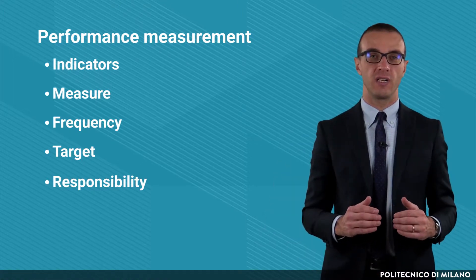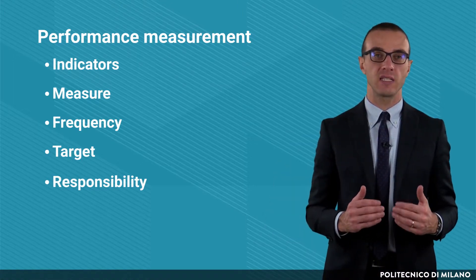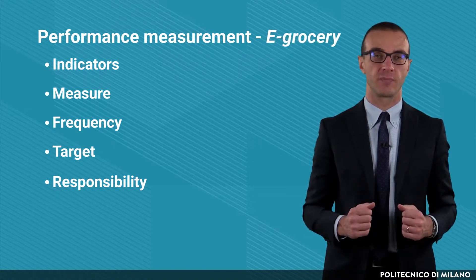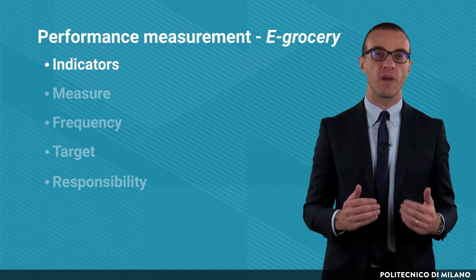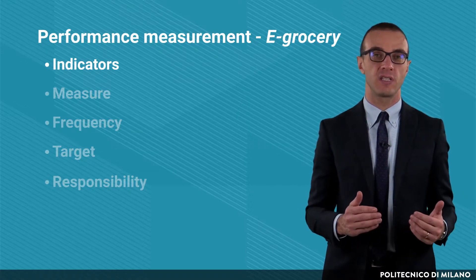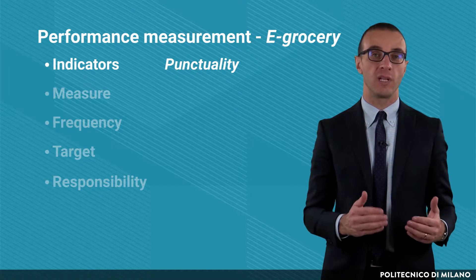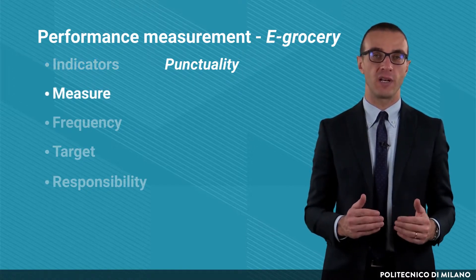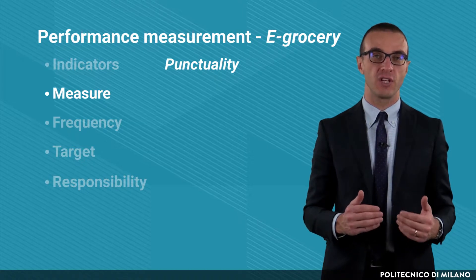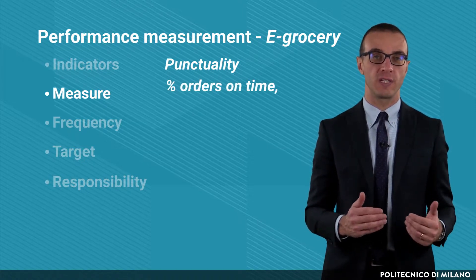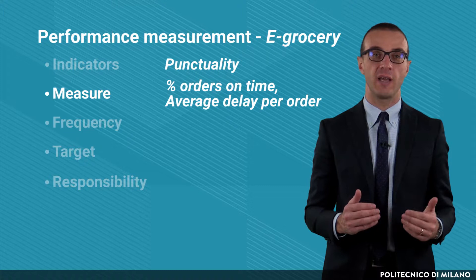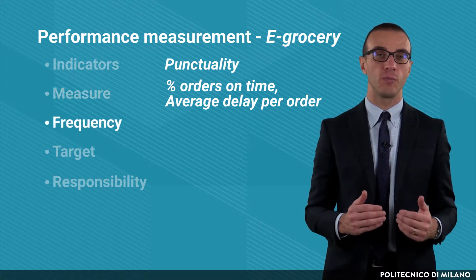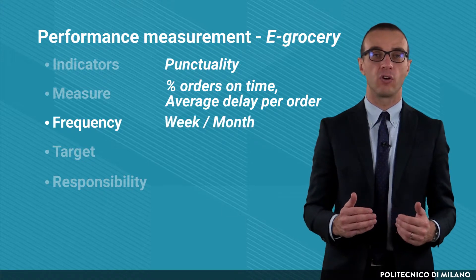In order to better understand these concepts, let's see an example referred to their application in the e-grocery context. Indicators to measure performances of the logistics system could be punctuality, delivery completeness, and order cycle time. If we consider punctuality, two examples of measures could be the percentage of orders on time or the average delay per order. The frequency of the measurement could be, for example, once per week or once per month.